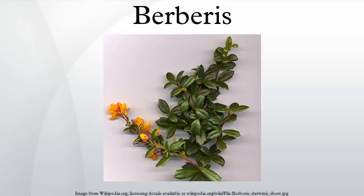The genus Berberis has dimorphic shoots: long shoots which form the structure of the plant, and short shoots only 1–2 mm long. The leaves on long shoots are non-photosynthetic, developed into three-spined thorns 3–30 mm long.